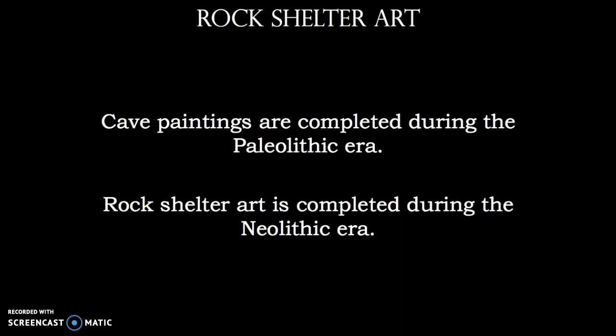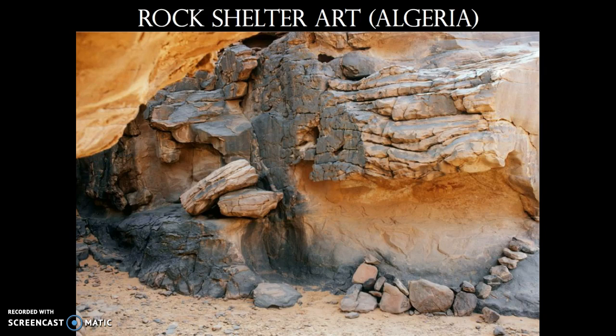As we go into the Neolithic era, something we didn't really bring up in the last video is what's called rock shelter art. Rather than deep cave paintings, these are paintings more exposed to the elements — more outside under small protective coverings rather than deep in the recesses of caves. It's also something we see exclusively in the Neolithic era. Here's an example from Algeria, although they are found throughout Northern Africa and Southern Europe. You can see, especially in the lower right-hand side, how the images are fairly small and definitely exposed to the elements.